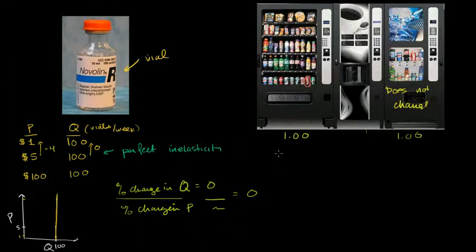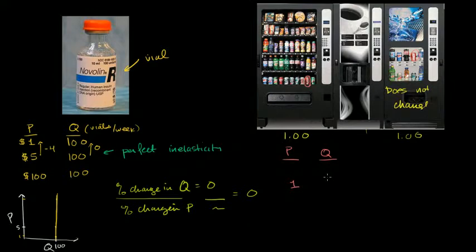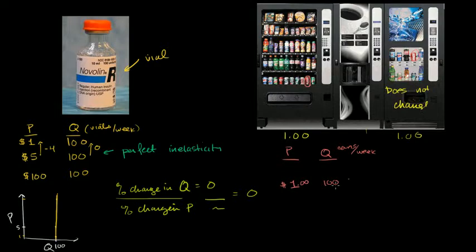Let's think about the price and the quantity demanded. If the price is $1, then odds are it's going to get about half of the sales per week — let's say that ends up being 100 cans per week. Now what happens, and let me put some decimals here. So at $1, it sells 100 cans per week, and probably this other machine would also sell about 100 cans per week.